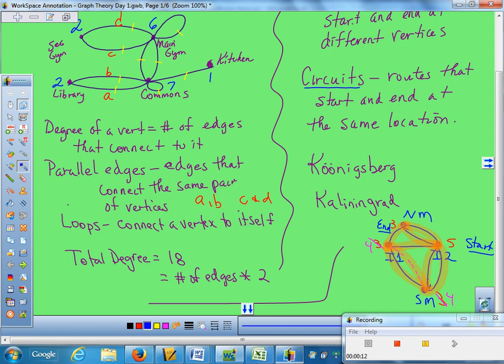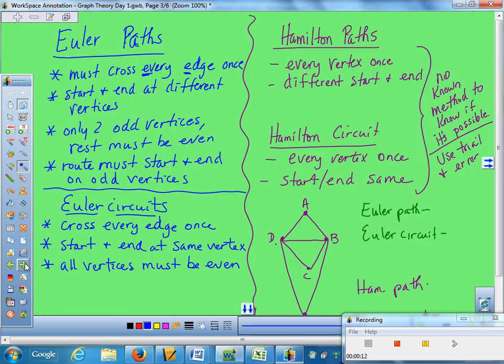So you have just discovered how to work Euler paths and Euler circuits. Euler paths, notice Euler starts with E. Euler paths have to cross every edge, every edge also starts with E, one time. But they have to start and end at different vertices. To have it work, you have only two odd vertices. The rest have to be even. Your route had to start and end at the odd vertices.